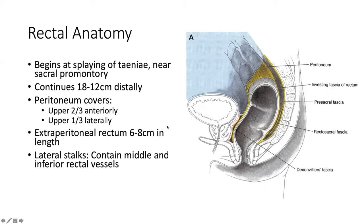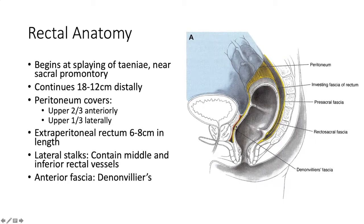In the lateral stalks you will find the named rectal vessels that become important when dividing or isolating the rectum surgically for things like an LAR or an APR. In terms of the fasciae, Denonvilliers' fascia or the anterior fascia is here — it's generally a little more flimsy. Obviously if this were a woman, this would be the rectovaginal fascia. In men you can call it rectoprostatic, or Denonvilliers' is a gender-neutral name. Posteriorly is Waldeyer's fascia.